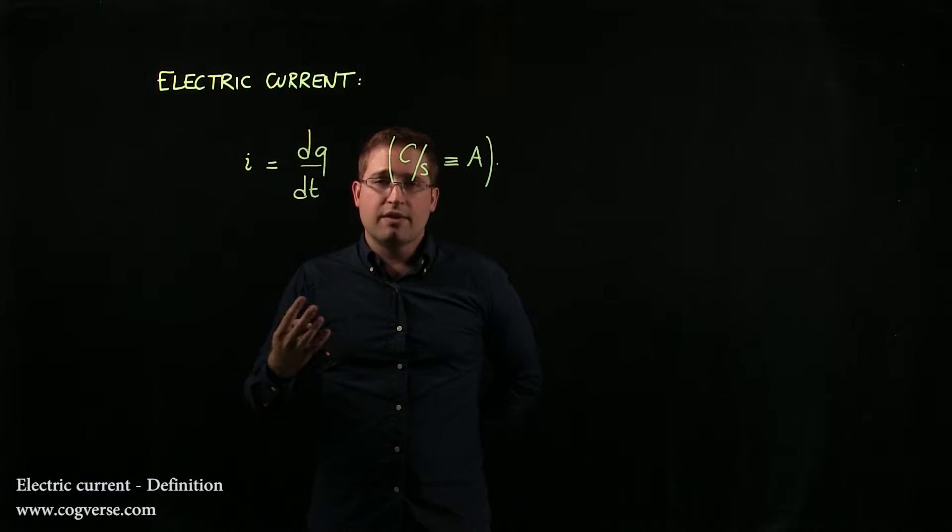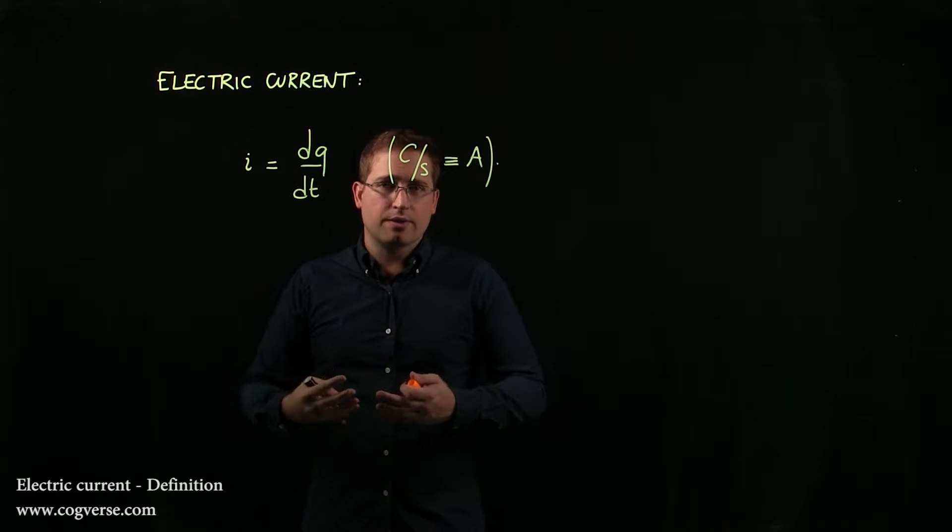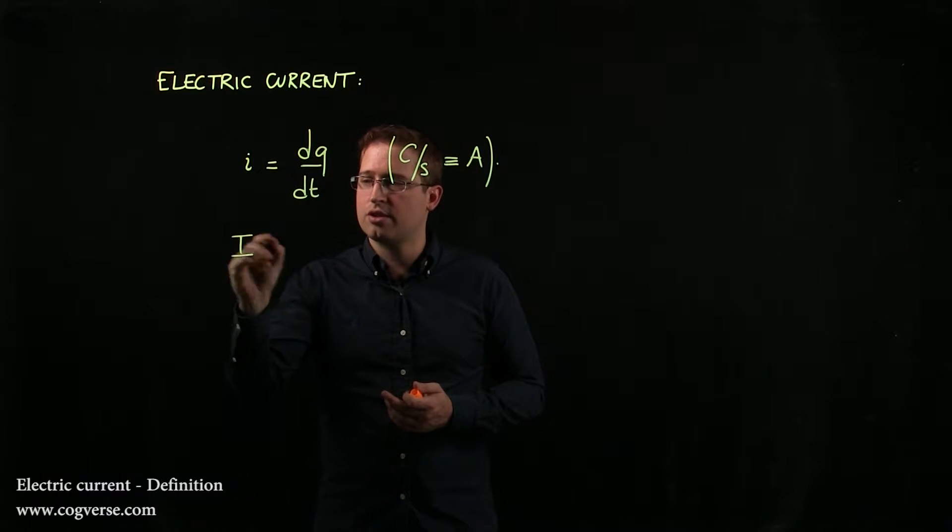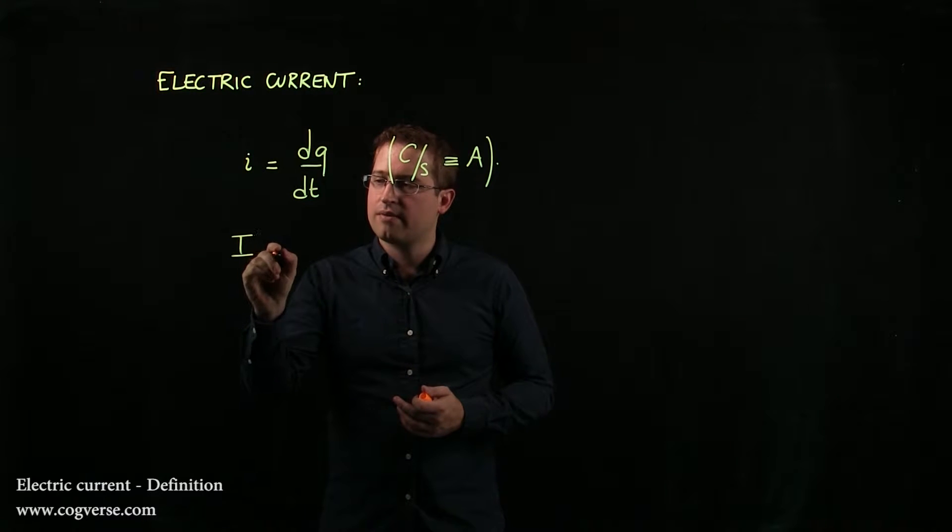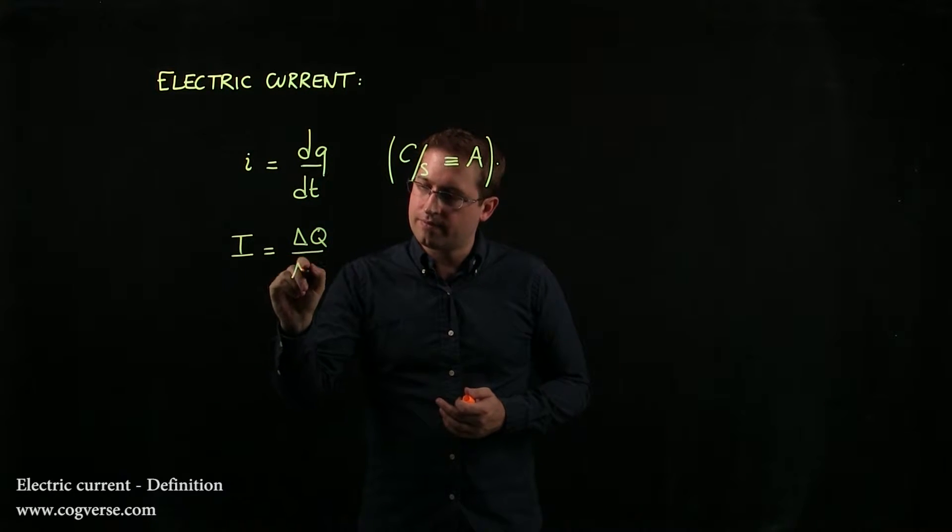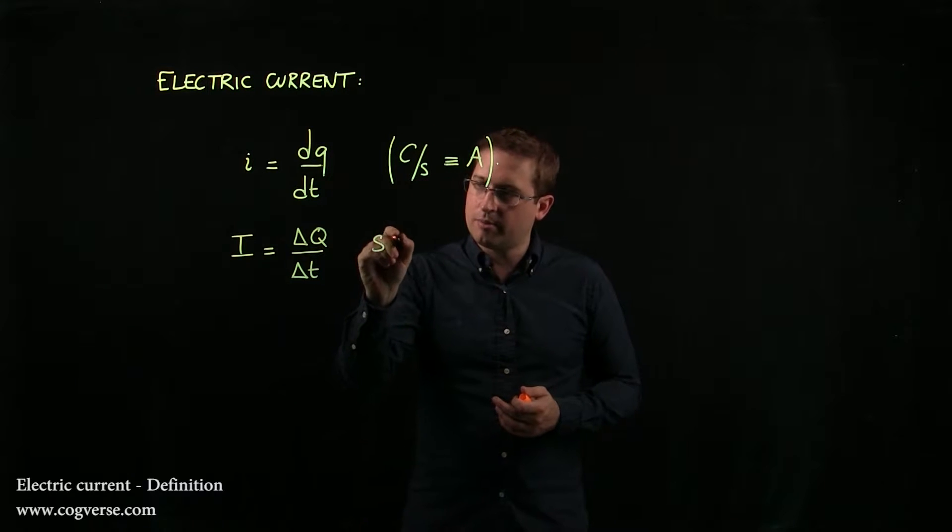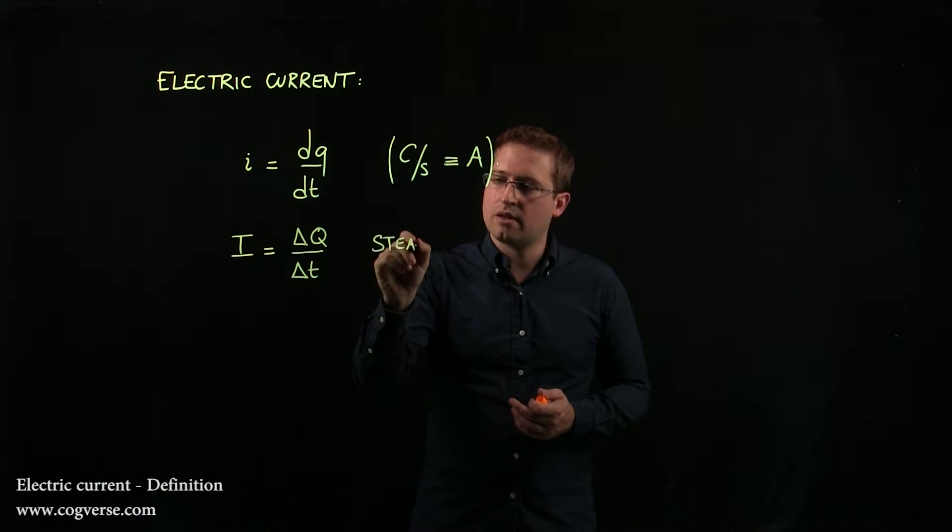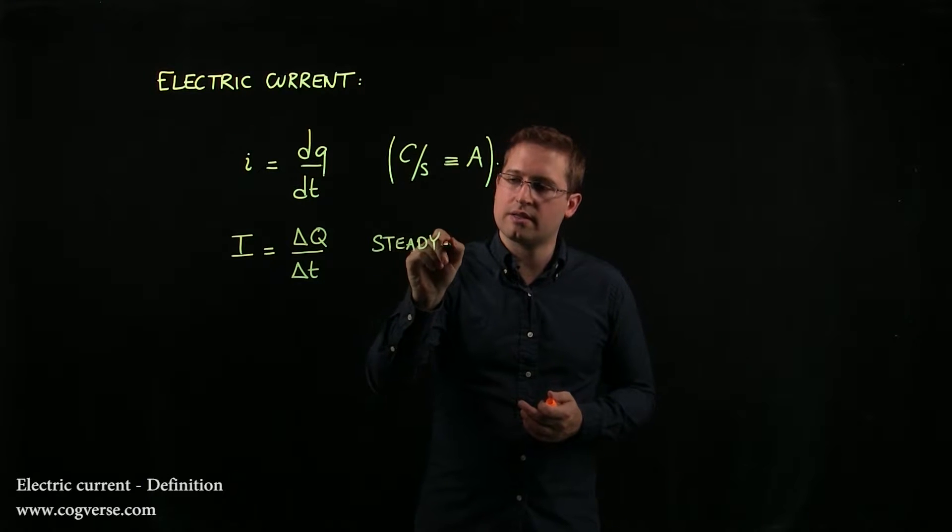Now, if we have a steady state and the current is constant, then we tend to denote it by uppercase I. And it is then equal to delta Q over delta t. But be careful, this assumes a steady state.